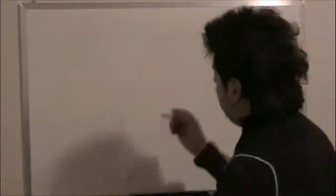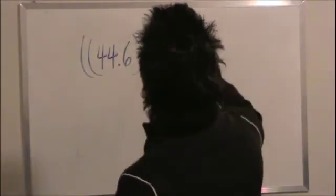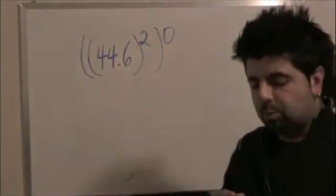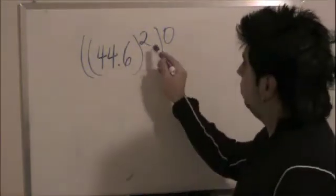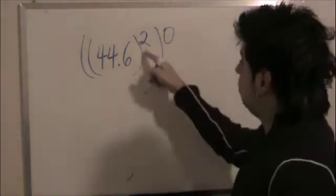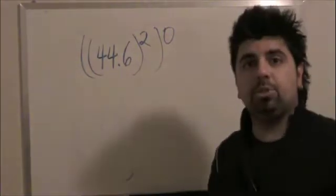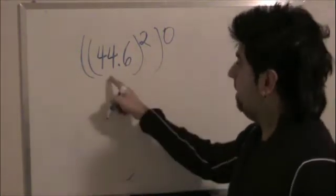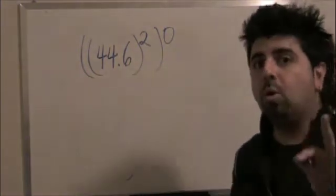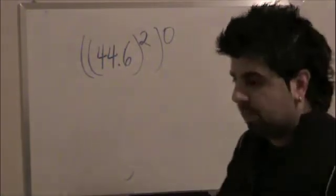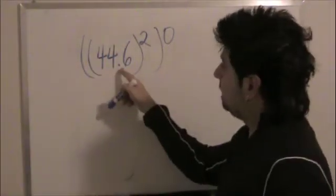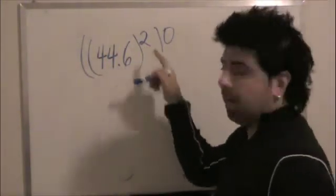So what you had was 44.6 to the power of 2 to the power of 0. The rule states whenever you have a power to a power, you multiply these two together, and then this to the power of that. Or you can do as follows. Whatever you get, you can expand this, 44.6 to the power of 2.